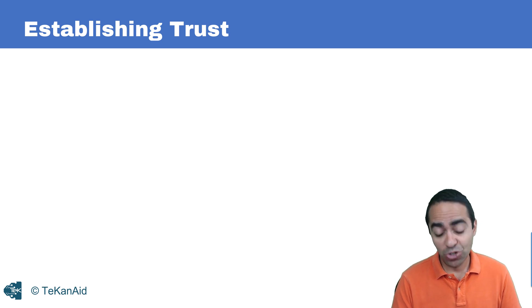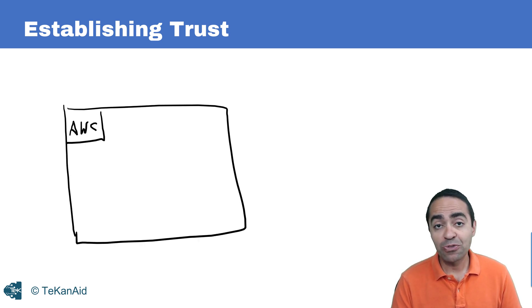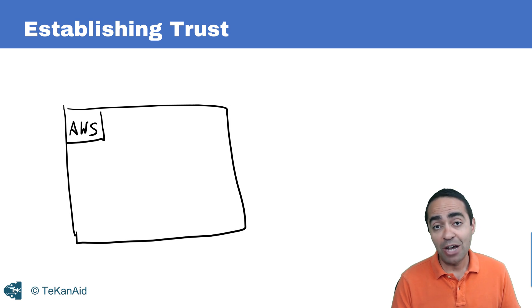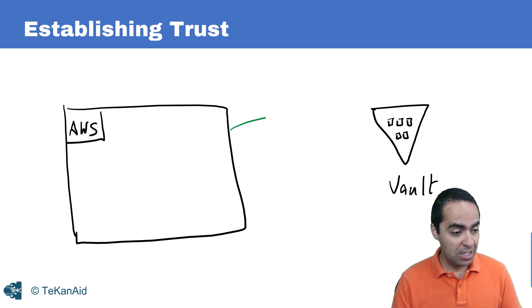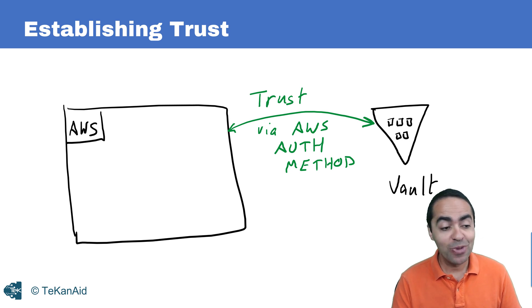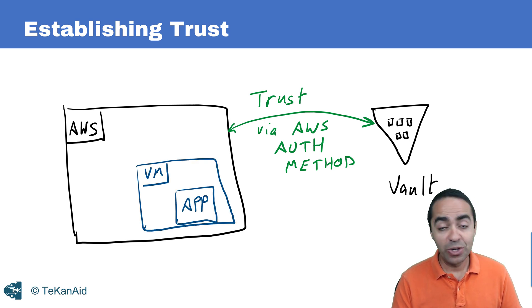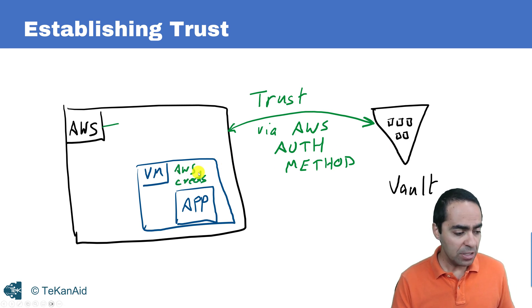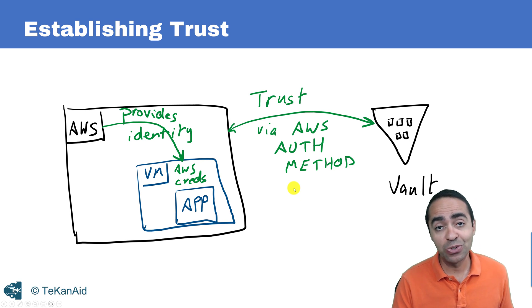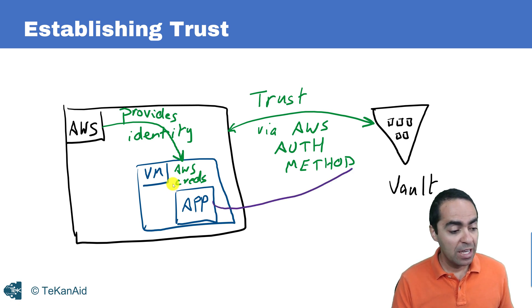First we have to establish trust, and this is straightforward when you have a platform that Vault can trust. We're going to use AWS as an example, but this applies to other platforms such as Azure, GCP, and Kubernetes. You establish trust between Vault and the platform using the AWS authentication method. When AWS spins up a resource under its management — in this case an EC2 instance, or it could be a Lambda function — AWS provides an identity to that machine.